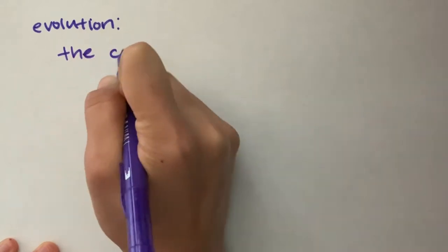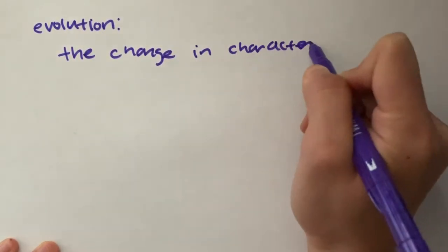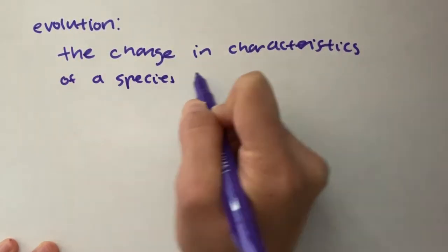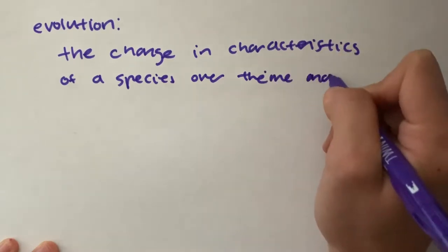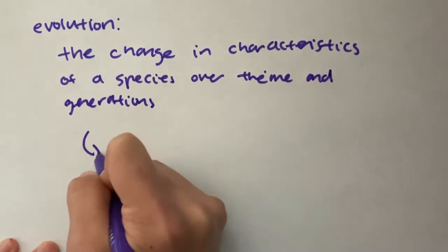What is evolution? In biology, evolution is the change in characteristics of a species over time and generations and relies on the process of natural selection.